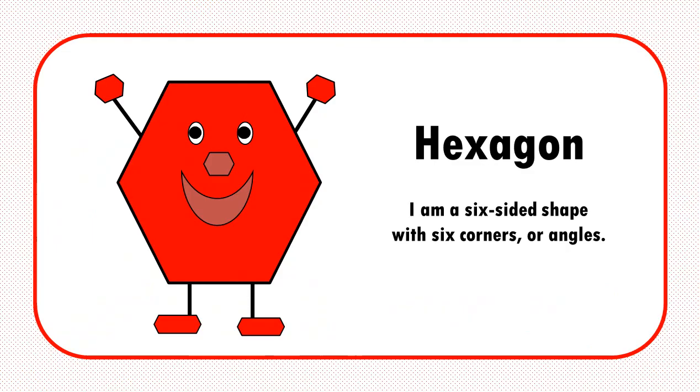Hi, I am a hexagon. I am a six-sided shape with six corners, or angles. Let's go ahead and count my sides. One, two, three, four, five, six.